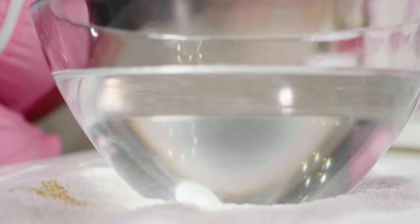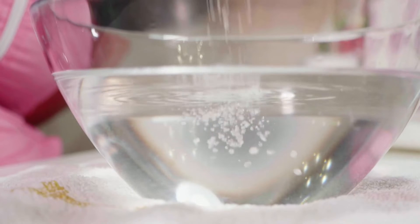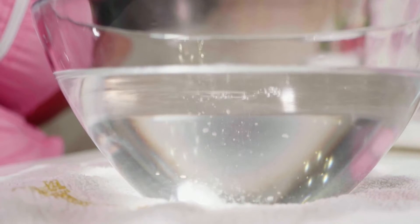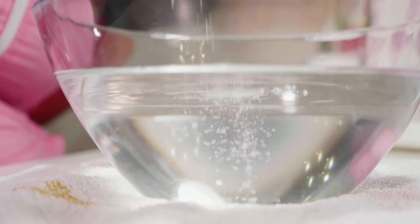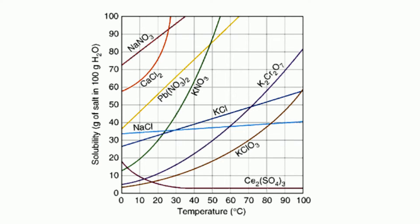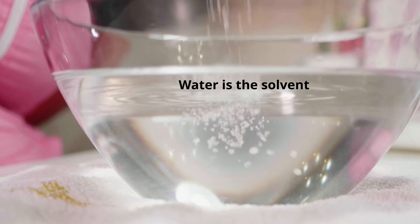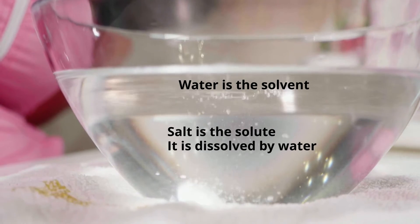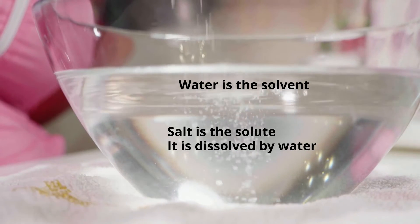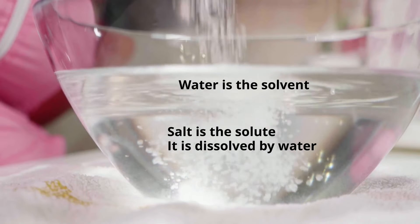Let's take a solvent like water and mix in salt. At a given temperature, water can only dissolve so much salt. You can look these up or use a solubility curve. When water is at 90 degrees Celsius, it can dissolve 40 grams of salt in 100 grams of water. The water is the solvent and the salt is the solute. Remember, the solute is what is being dissolved.